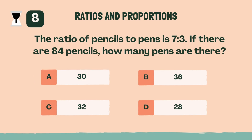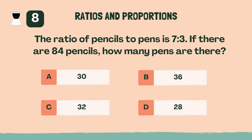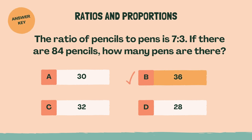The ratio of pencils to pens is 7 to 3. If there are 84 pencils, how many pens are there? B, 36.